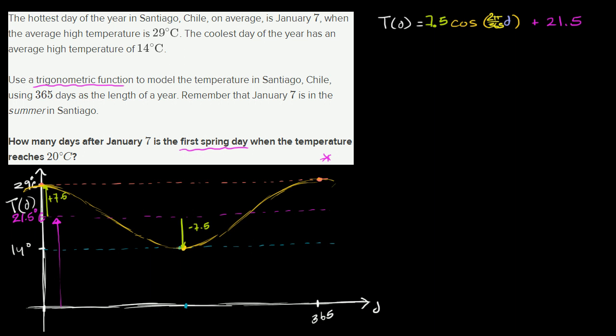In the last video, we were able to model the average high temperature in Santiago, Chile as a function of days as we go through the year, where the days were the days after January 7. So this right over here, day 0, is actually January 7.